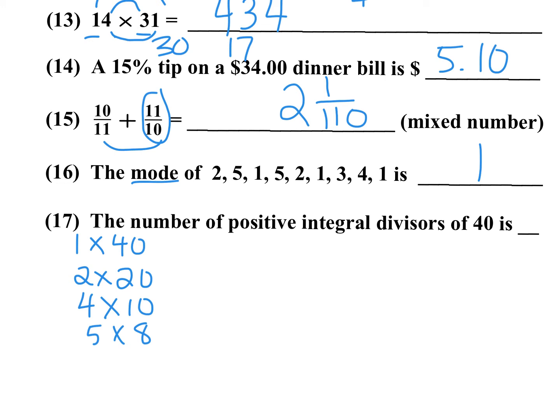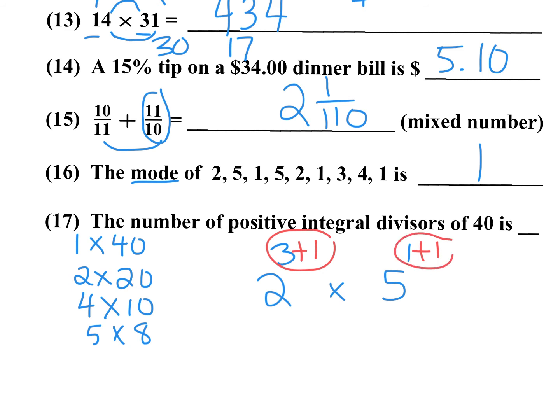An easier way: prime factor 40 as 2 cubed times 5 to the first. Add 1 to each exponent — (3+1) times (1+1) = 4 times 2 = 8. That's how you find the number of positive integral divisors for any number: prime factorize, add 1 to each exponent, then multiply those together.